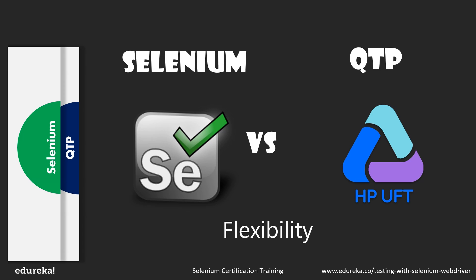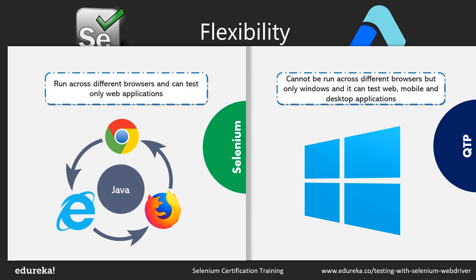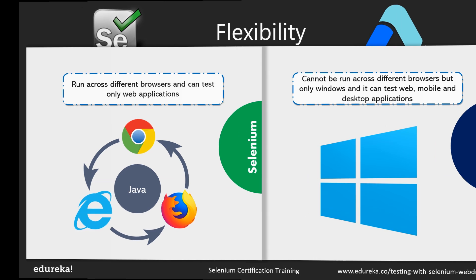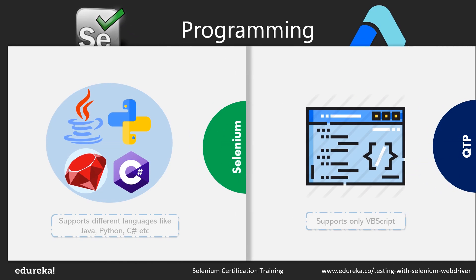Selenium is highly flexible because test scripts can be run across different platforms like Chrome, Firefox, Opera, and so on, though it can test only web applications. QTP is not very flexible when it comes to executing test cases across different platforms — it mainly supports Windows but can test web, mobile, and desktop applications. Regarding programming languages, Selenium test scripts can be written using Java, Python, C#, Ruby, and more, whereas QTP test scripts are written using VBScript only.